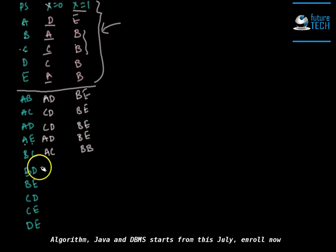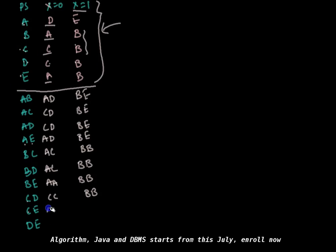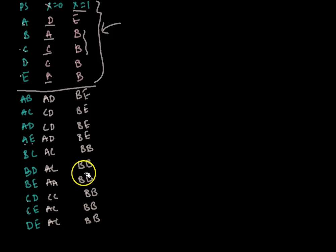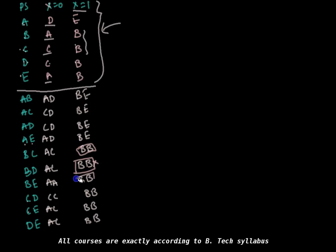For B-D, the implied pairs are A-C and B-B. For B-E, the implied pairs are A-A and B-B. For C-D, C-E, and D-E, the implied pairs are C-C, B-B, A-C, and B-B respectively. Same-state pairs like A-A, B-B, C-C are going to be eliminated and will not be used in the development of the testing graph, since they represent a state paired with itself.